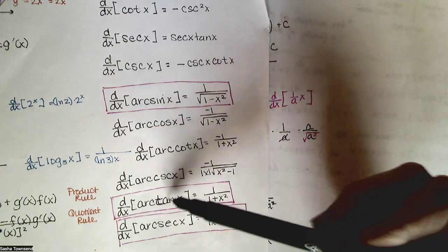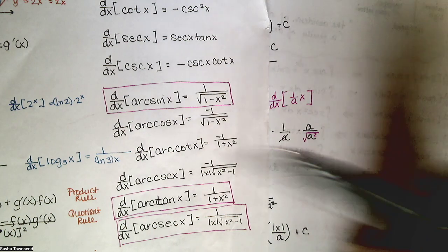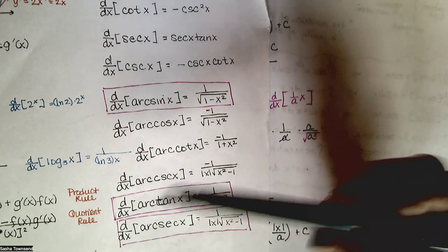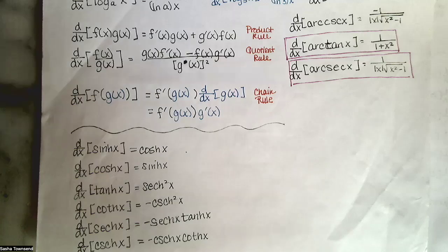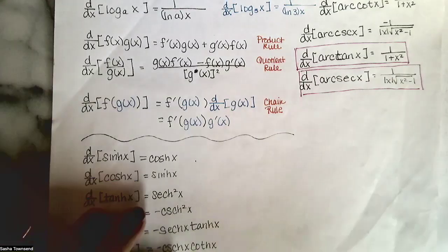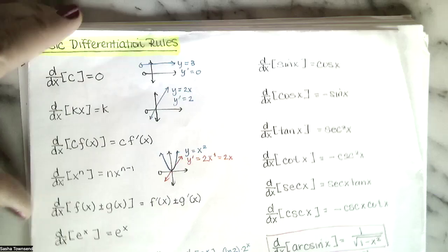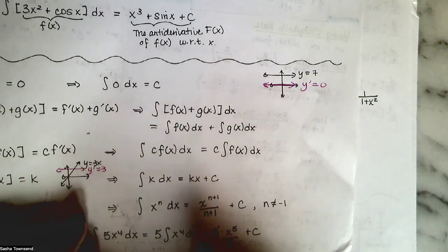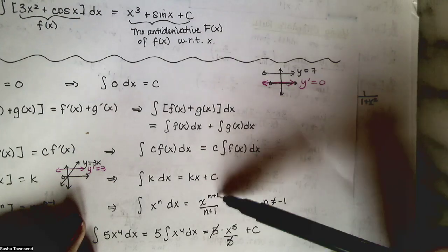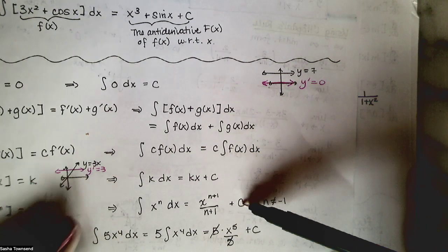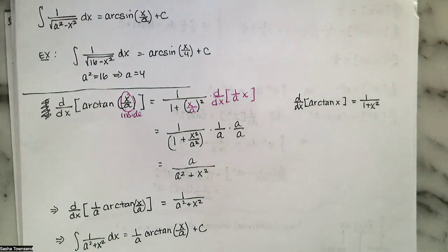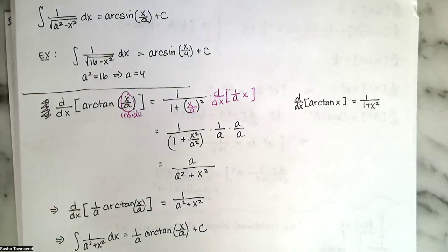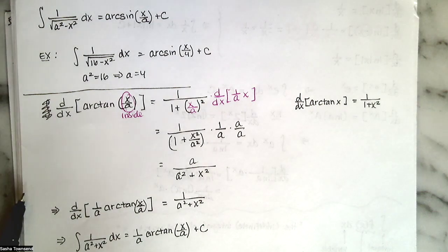We also have backwards versions of the hyperbolic function derivative rules. The anti-derivative of hyperbolic cosine of x is hyperbolic sine of x plus c. The anti-derivative of hyperbolic sine of x is hyperbolic cosine of x plus c. And so on for the remaining hyperbolic functions. We can create a complete formula sheet for basic anti-differentiation rules, just as we have one for differentiation.